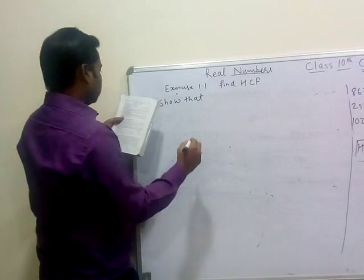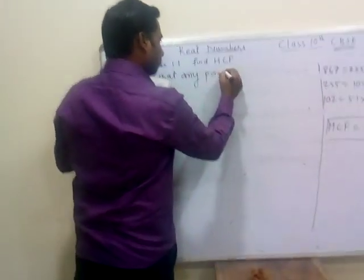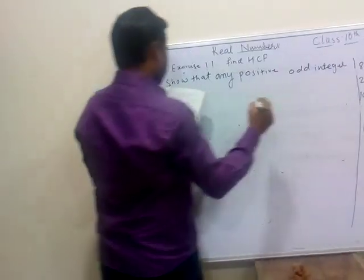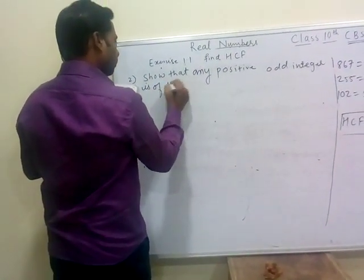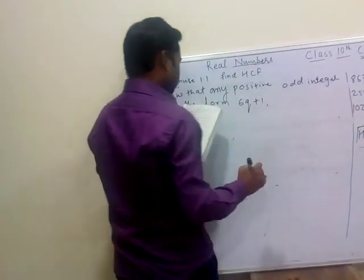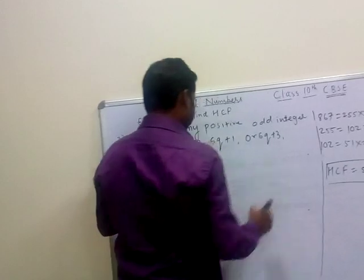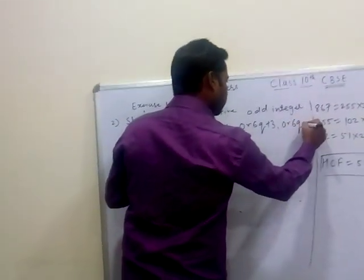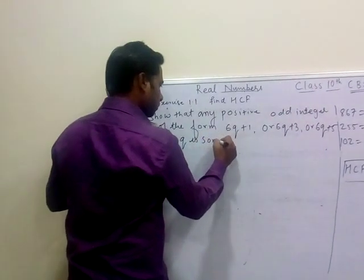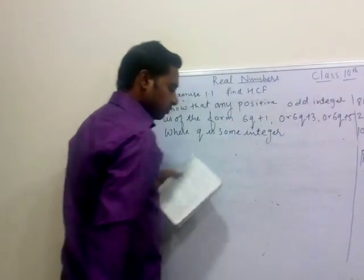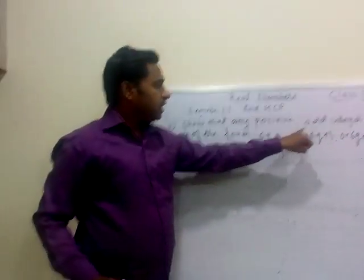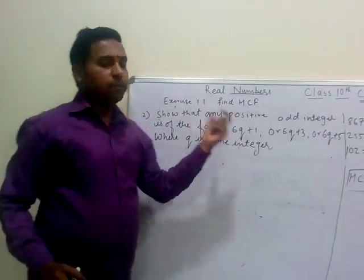Show that any positive odd integer is of the form 6Q + 1, or 6Q + 3, or 6Q + 5, where Q is some integer.